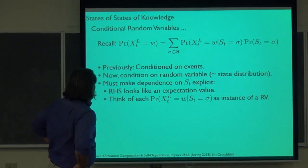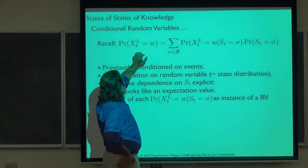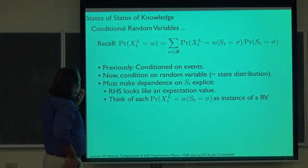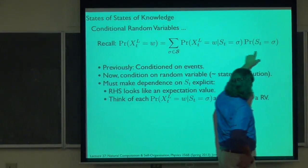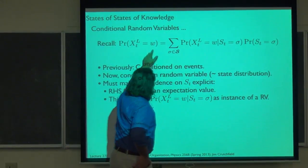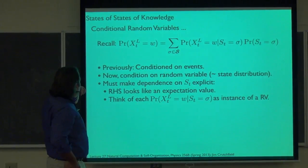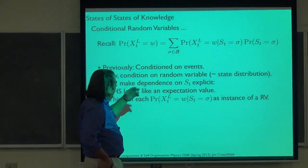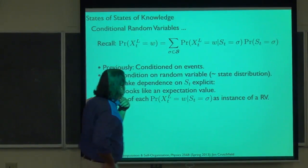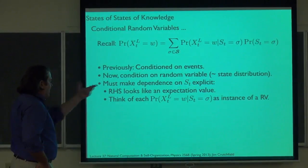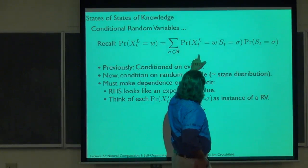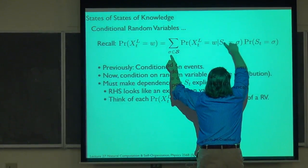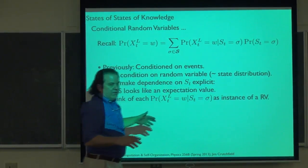Getting back to where we're going to use this conditional random variable notation: we're interested in the word distribution, being careful to be clear that it depends on the state distribution as we produce the word. So now we're conditioning on state distributions when calculating word probabilities and entropies, and we have to make this dependence on the state explicit. This expression looks like a state average — like an expectation value.